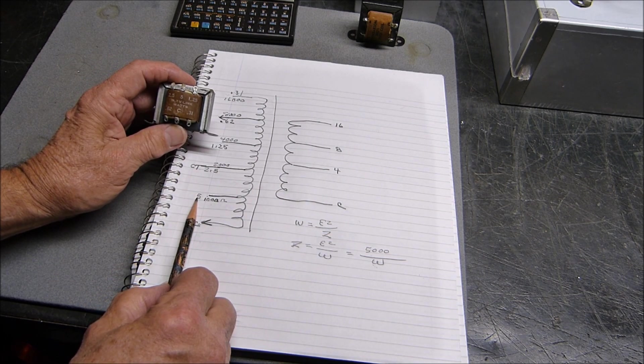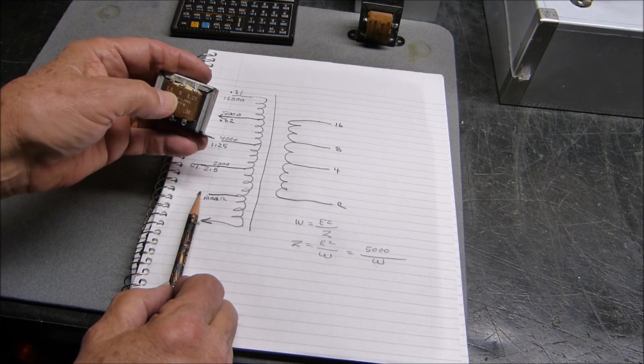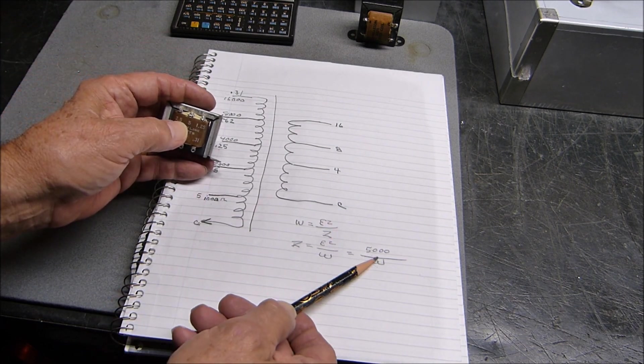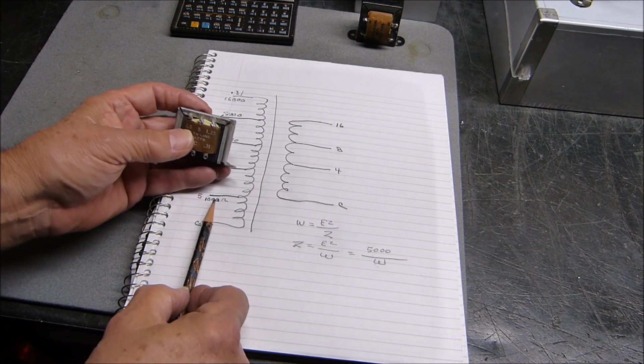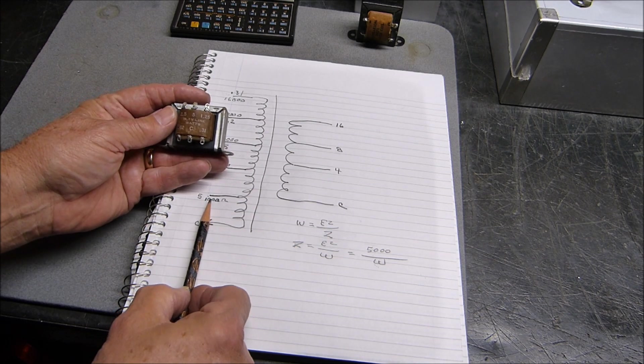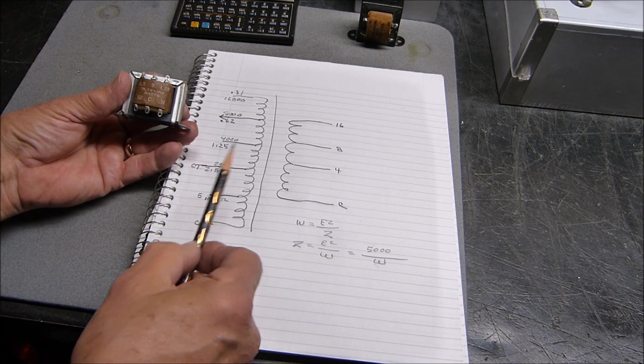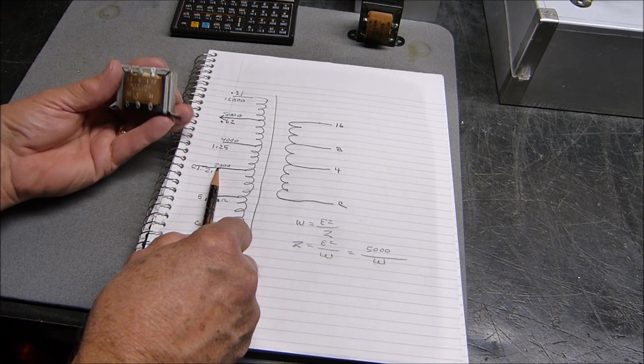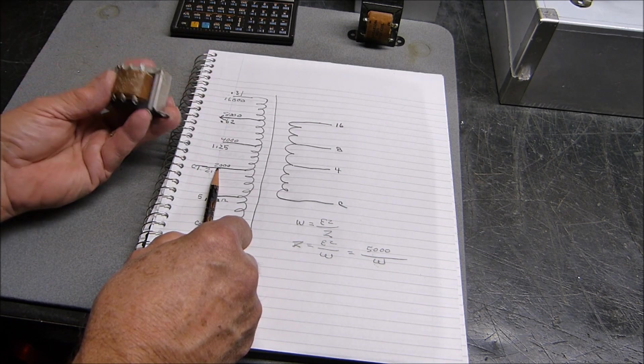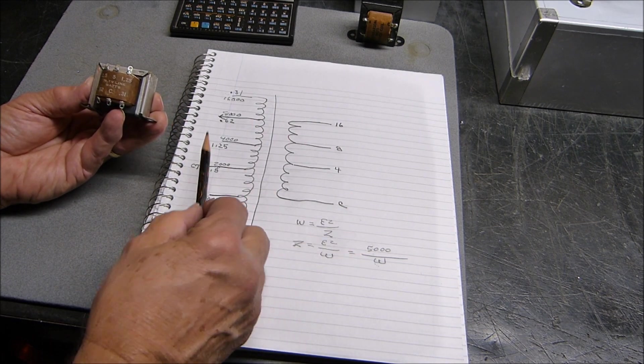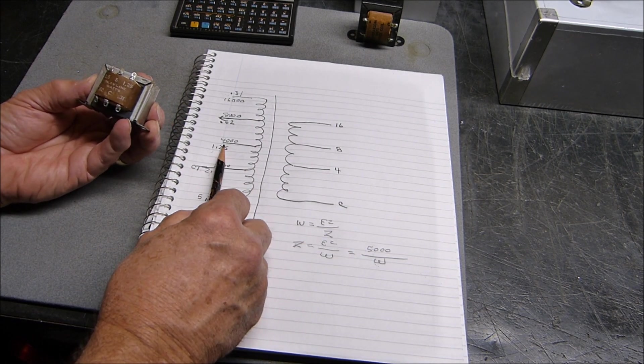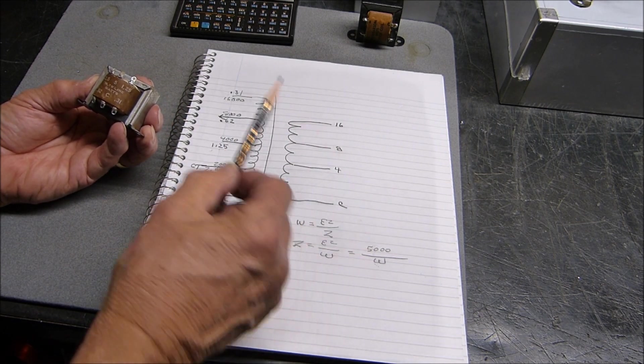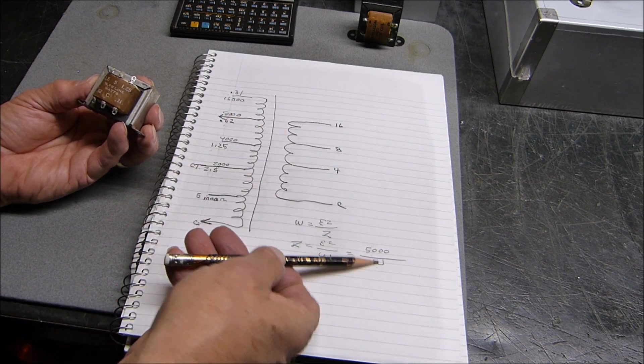This one, once you divide 5,000 by 5 watts, you get 1,000 ohms. This is the 1,000 ohm winding. If we divide 5,000 by 2.5, we get 2,000, and in this case each one doubles.